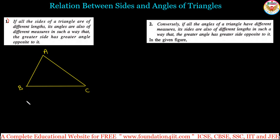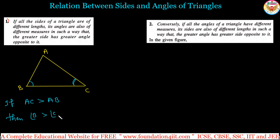For example, if AC is greater than AB, then the angle opposite AC, which is angle B, is also greater than the angle opposite AB, which is angle C. So if AC is greater than AB, then angle B is greater than angle C. The greater side has the greater opposite angle.